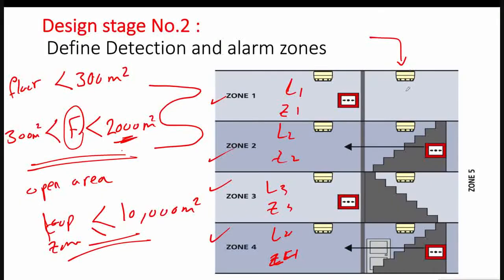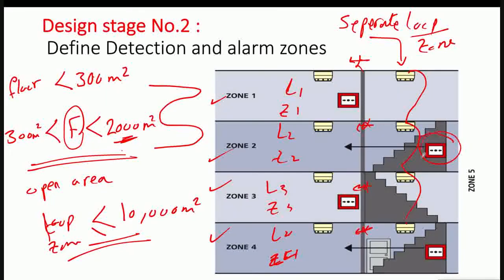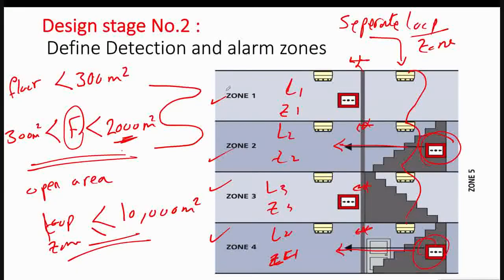An important consideration: all stairs on all floors should be on a separate loop or zone. The stairs zone connects all stairwells across all floors and is not connected to the floor zone. However, all manual call points on the stairs should be connected to the floor loop.